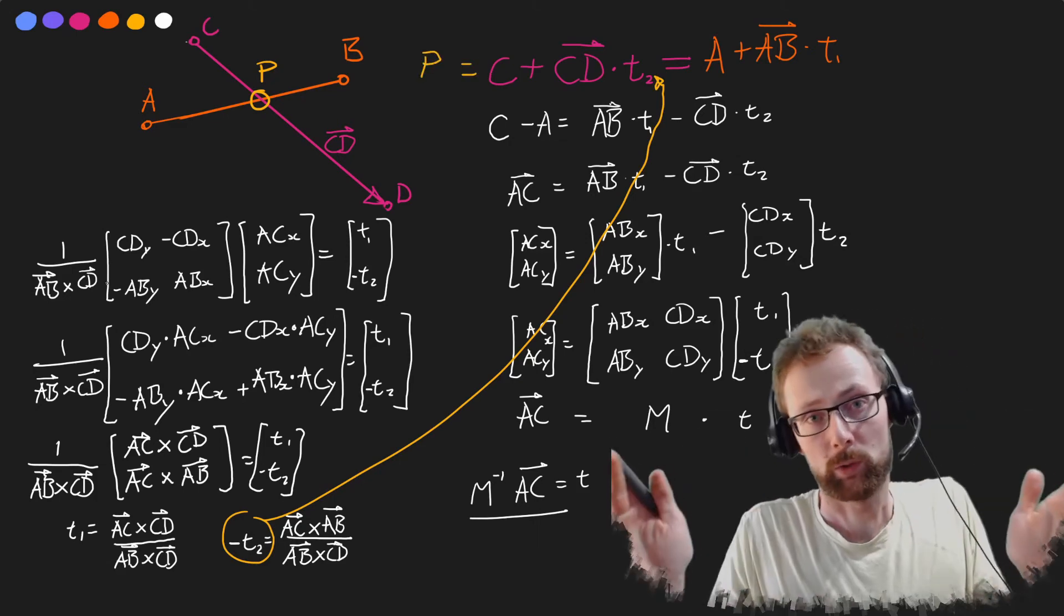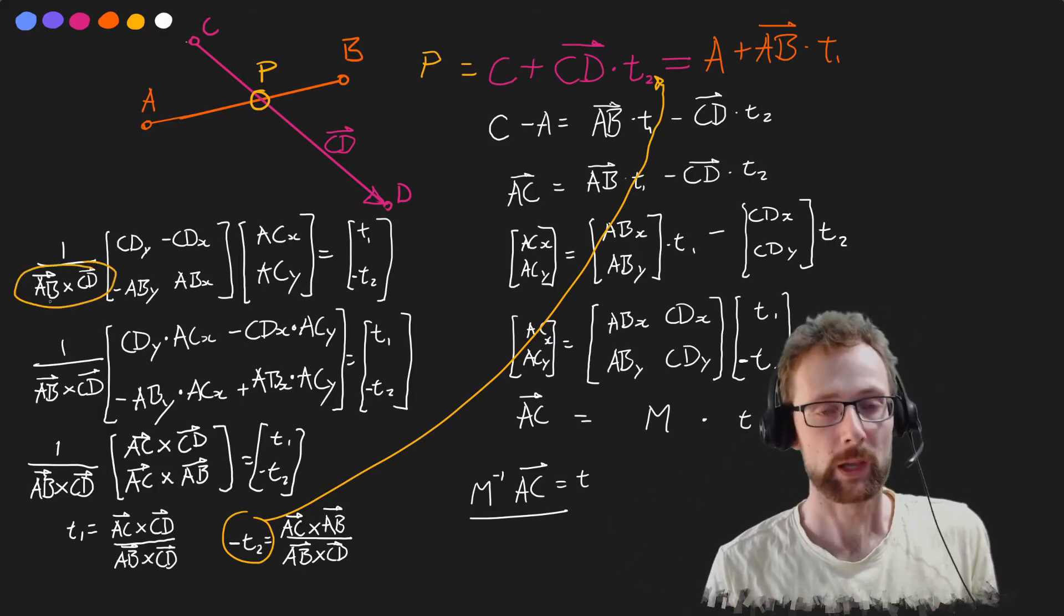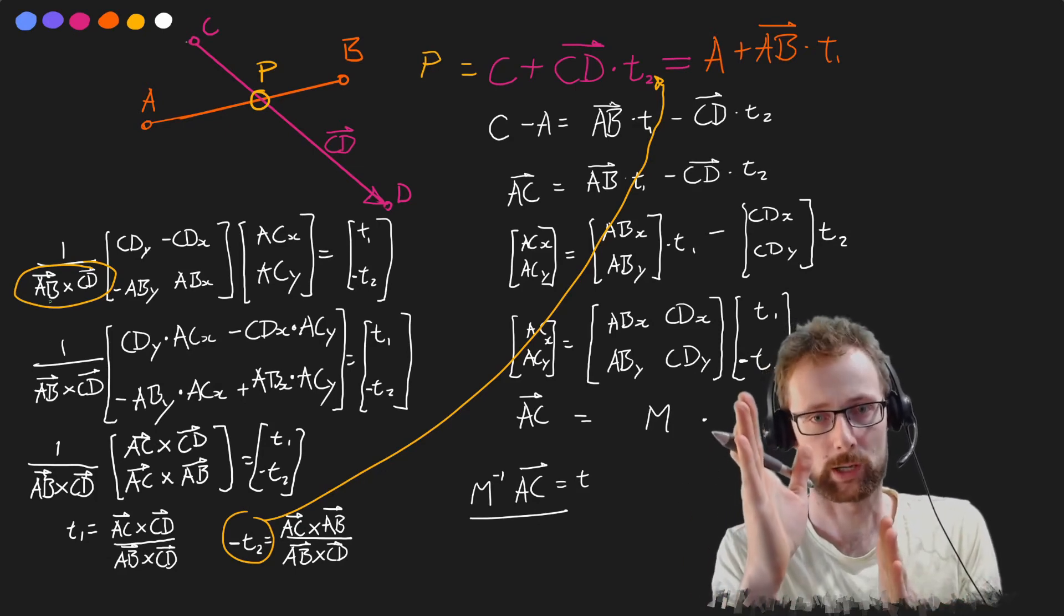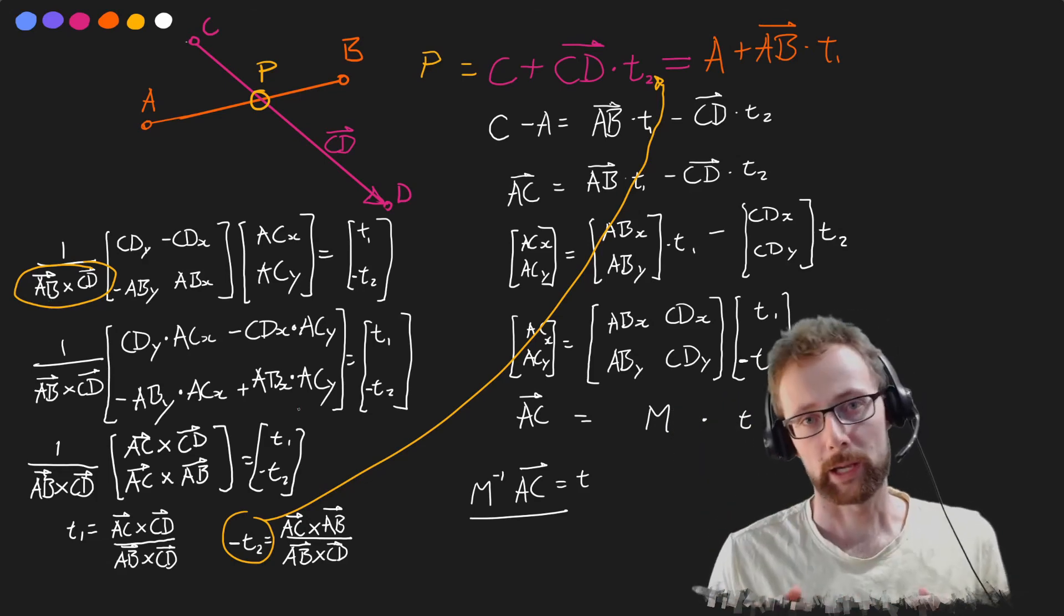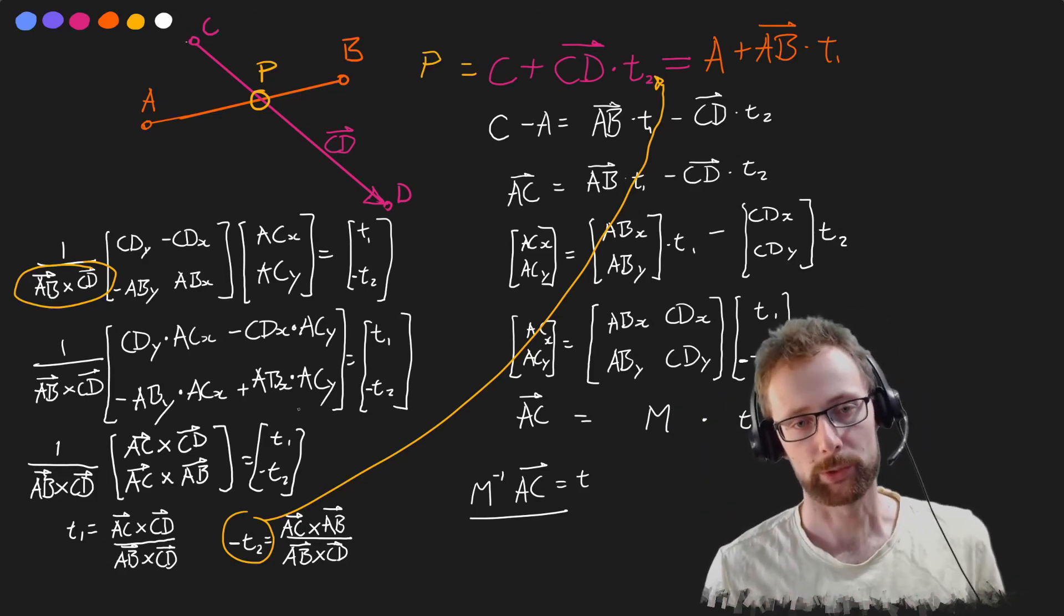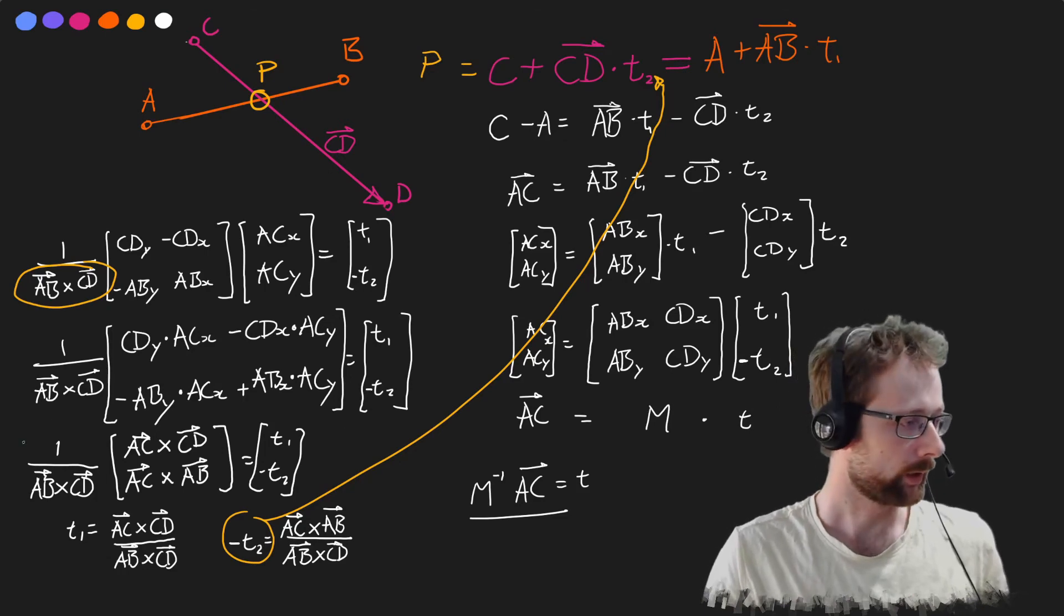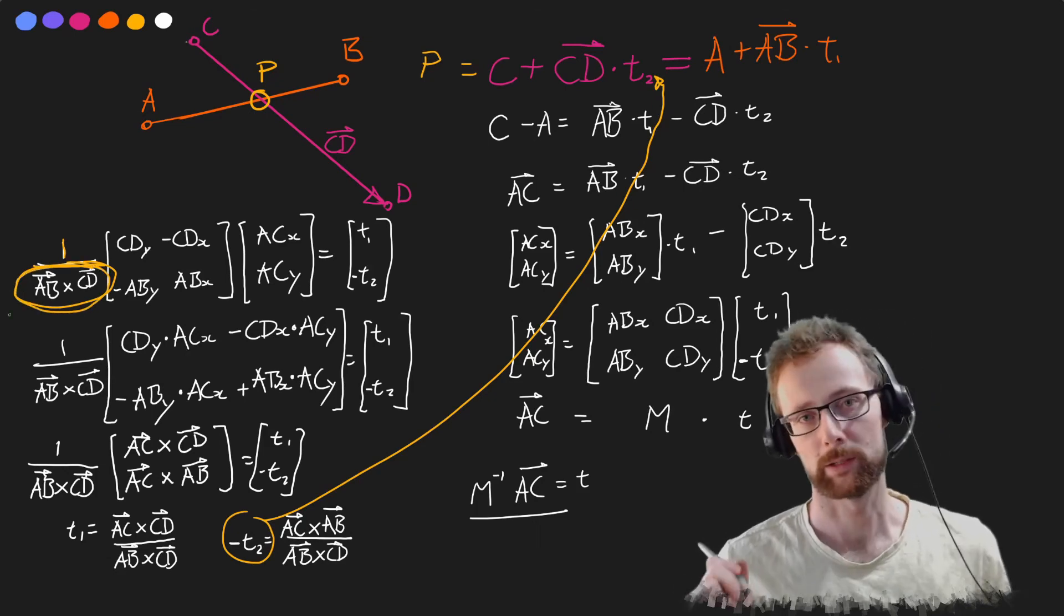The only way this won't work is if this cross product here ab cross product cd is equal to zero, which happens whenever the original two lines are parallel or collinear. In that case this approach won't get you a solution and you'll have to try something else because you can't divide by zero. Basically you have to do this one divided by ab cross product cd and that's not going to work.